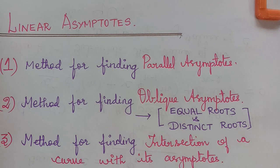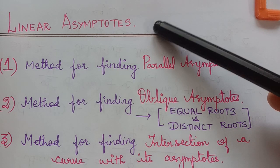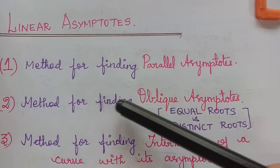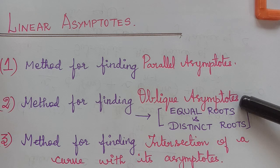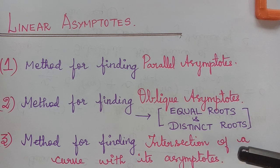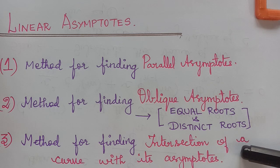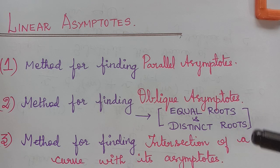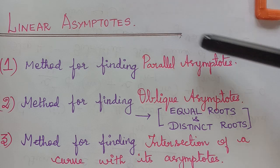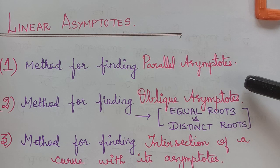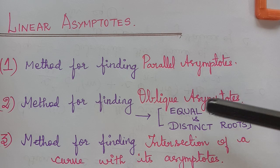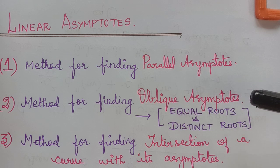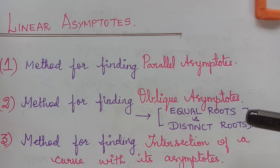Dear students, under the topic linear asymptotes, we will be learning about the method for finding parallel asymptotes, the method for finding oblique asymptotes, and the method for finding intersection of a curve with its asymptotes. In our previous lecture, we learned the definition of asymptotes and the types of asymptotes with examples. We also learned the rules to solve oblique asymptotes when the roots are equal and when they are distinct.